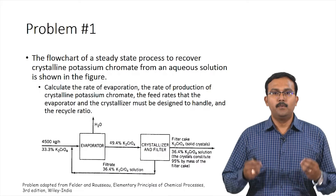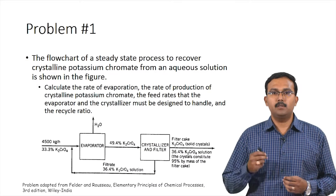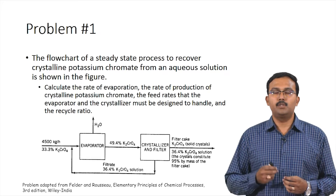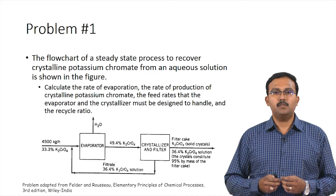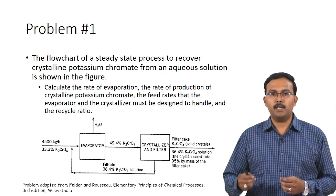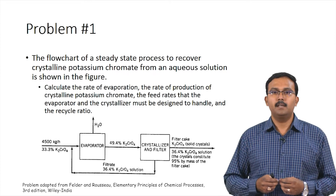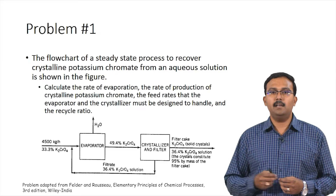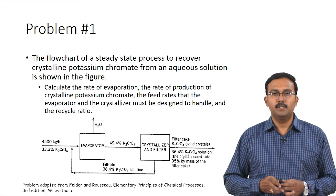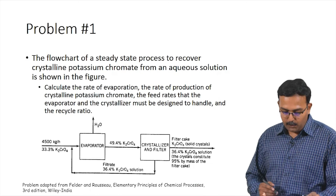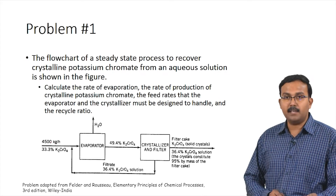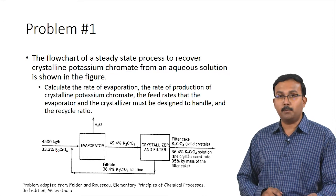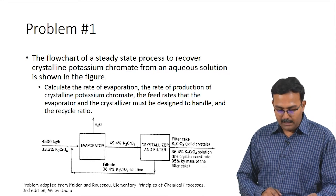Let us look at the first problem. The flowchart of a steady-state process to recover crystalline potassium chromate from an aqueous solution is shown in the figure. You are asked to calculate the rate of evaporation, the rate of production of crystalline potassium chromate, the feed rate that the evaporator and the crystallizer must be designed to handle, and the recycle ratio. In this flowchart, 4500 kilograms per hour of 33.3% potassium chromate solution enters as fresh feed.